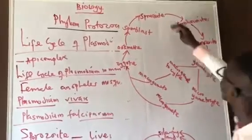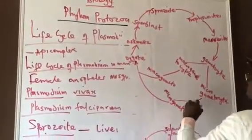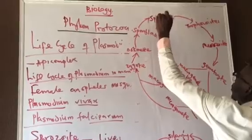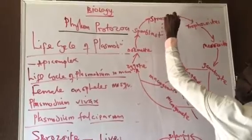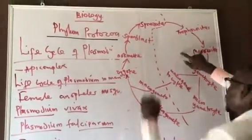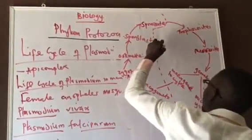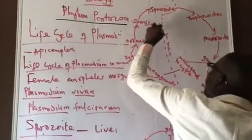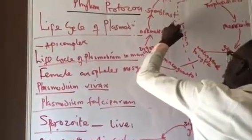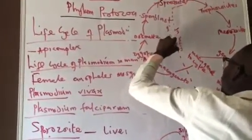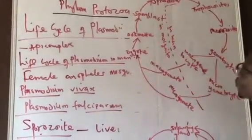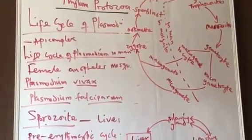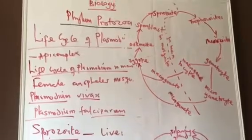So this is the life cycle: the mosquito releases sporozoites into man, completing the life cycle of man, and then the life cycle continues in the mosquito. You can see how the Plasmodium moves from one organism to the other during the stages of its life cycle.